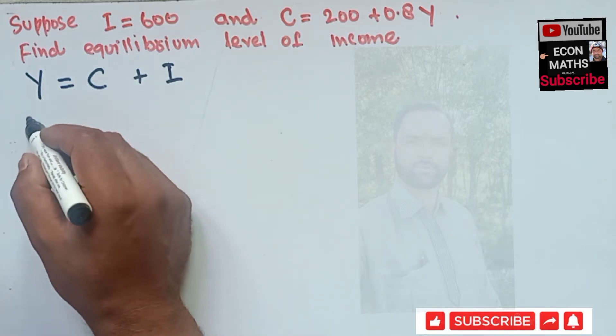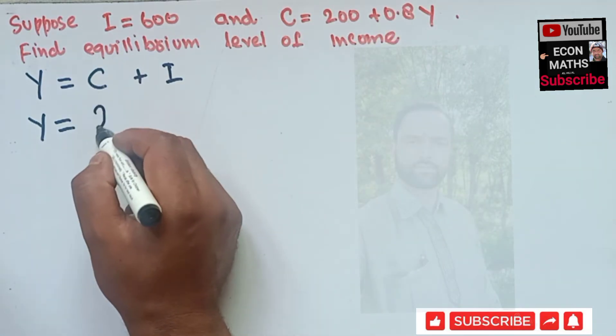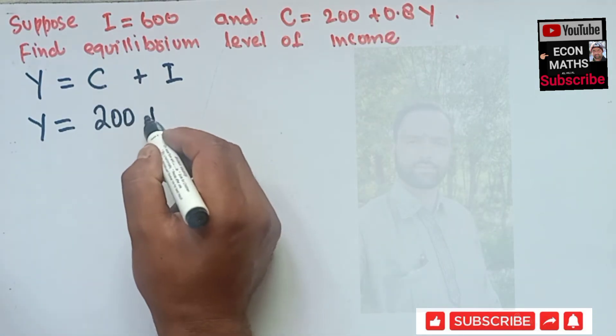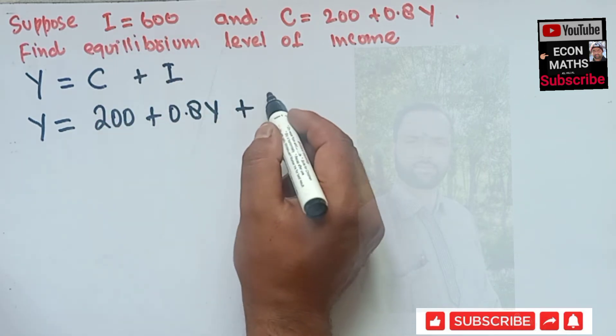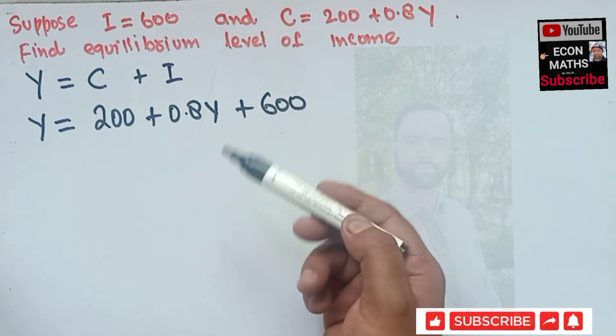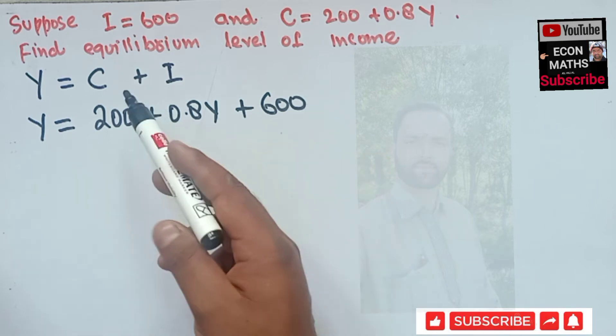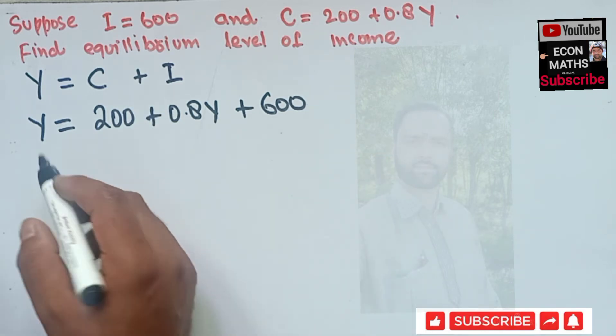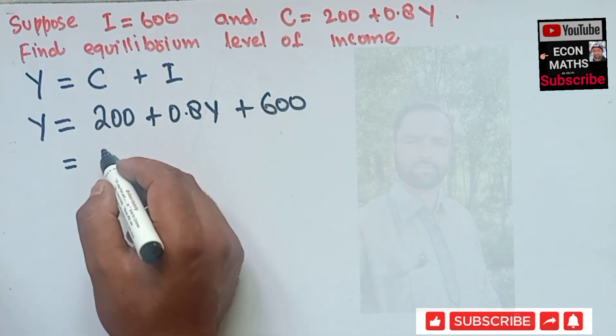Now Y is equal to our consumption function which is given as 200 plus 0.8Y, plus the investment is autonomous here, so this is 600. That very investment which doesn't depend upon the level of interest rate is known as autonomous investment.